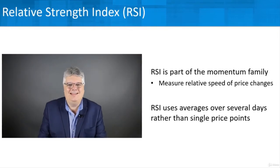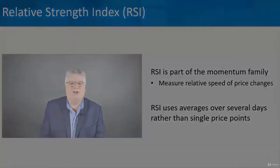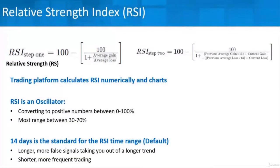For those who love math, you don't have to calculate this — the trading platform will automatically put nice lines and charts on your chart. But if you're wondering, there's a step one and step two to figure out RSI, or Relative Strength Index. One key thing to take away from the math is that RSI is part of momentum, but it's also part of what's considered the oscillator subcategory.